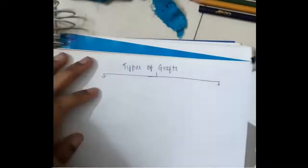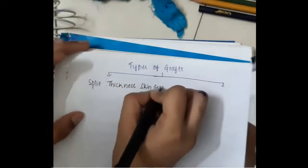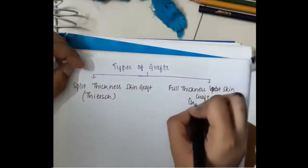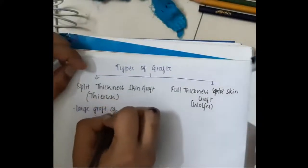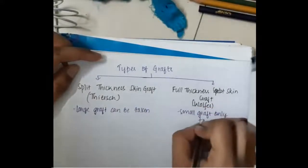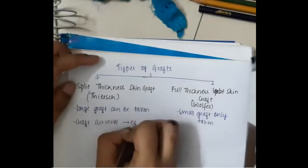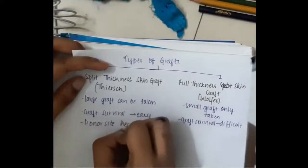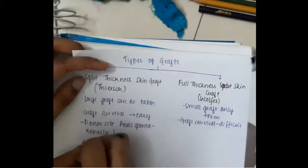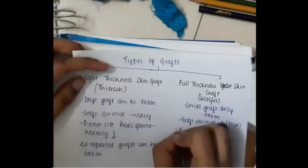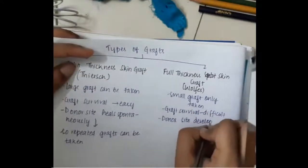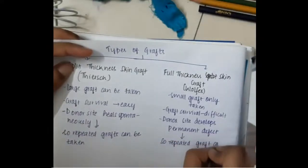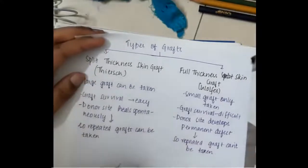There are two types of grafts: split thickness skin graft and full thickness skin graft. The split thickness skin graft is also called the Thiersch graft, whereas the full thickness skin graft is also called the Wolfe graft. In the Thiersch graft, a large graft is taken and survival is easy, whereas in the Wolfe graft, only a small graft is taken and survival is difficult. In the Thiersch graft, the donor site heals spontaneously so repeated grafts can be taken, whereas in the Wolfe graft, the donor site develops a permanent defect so repeated grafts cannot be taken.